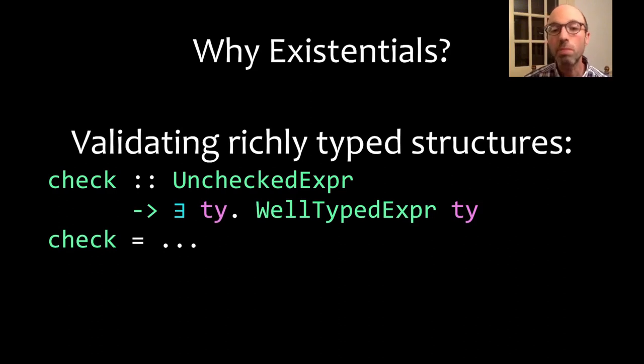In a larger compiler, we might have a parsed expression which is as yet unchecked, this unchecked expression, and we want to check it to form a well-typed expression. Of course, we don't know what type it's going to have until we actually check it, and so this checking is going to produce an existential type because I don't know what type is going to be. Once again, we need an existential type.